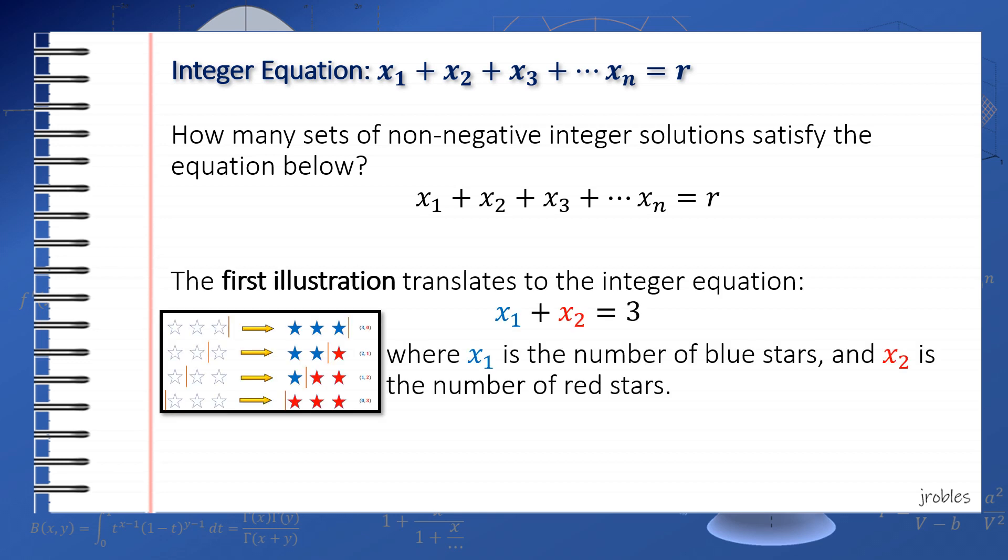In terms of an integer equation, the first illustration is equivalent to the integer equation x_1 + x_2 = 3, where x_1 is the number of blue stars and x_2 is the number of red stars.